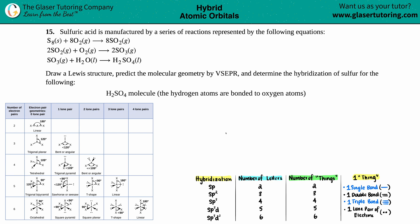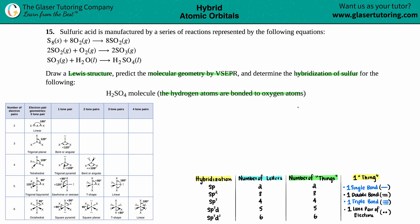Number 15. Sulfuric acid is manufactured by a series of reactions represented by the following equations. It says: draw the Lewis structure, predict the molecular geometry by VSEPR, and determine the hybridization of sulfur for H2SO4. They give us a hint: the hydrogen atoms are bound to oxygen atoms.